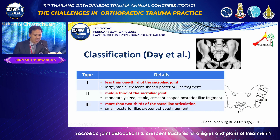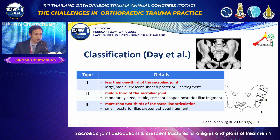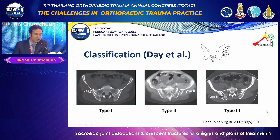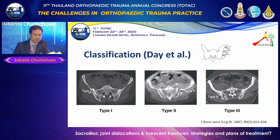They proposed a classification for this specific fracture type. In 2007, they classified it as type 1, 2, and 3 — defined from anterior to posterior by the size of the fragment: large, medium, or small. They proposed different treatment plans for each type. For type 1, type 2, and type 3, the plan may differ.